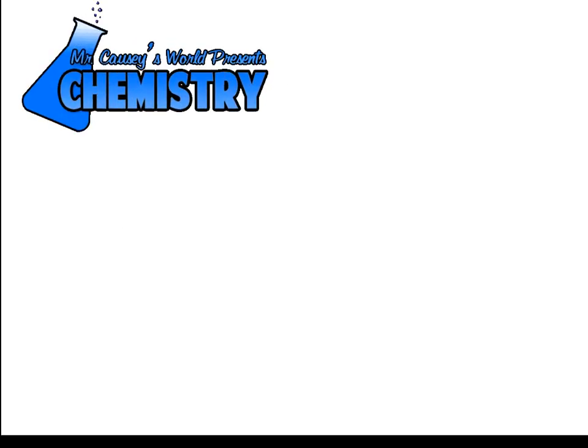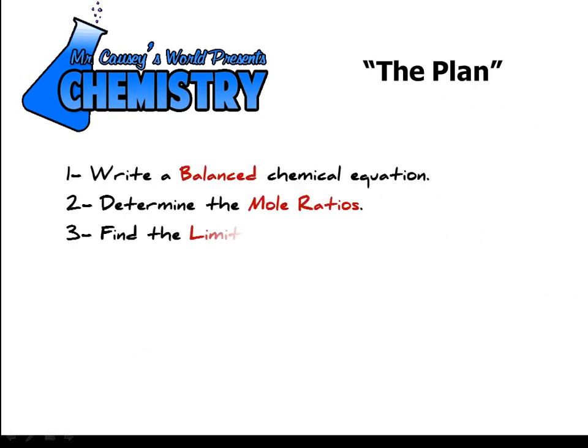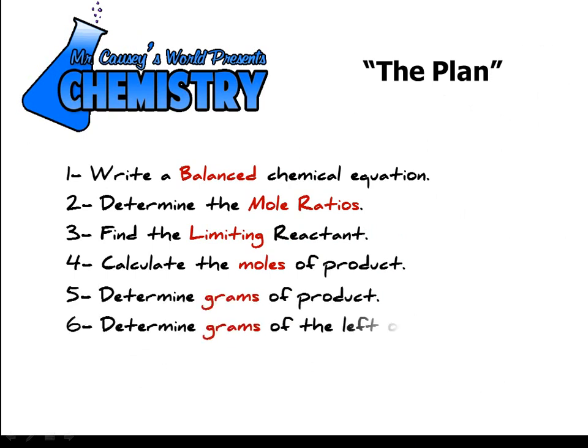First, let's write a balanced chemical equation, determine the mole ratios, find the limiting reactant, calculate the moles of product, then take the moles of product and determine the grams of product, and then determine the grams of the leftovers. We can do all of this by using our knowledge of stoichiometry, making sure that we know what molar mass is, and using our periodic table. There's the plan.